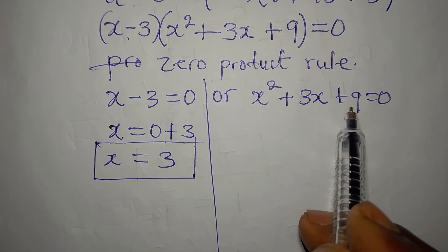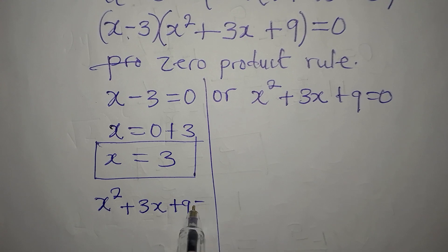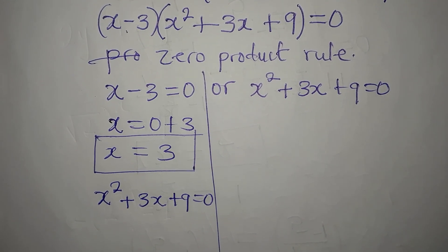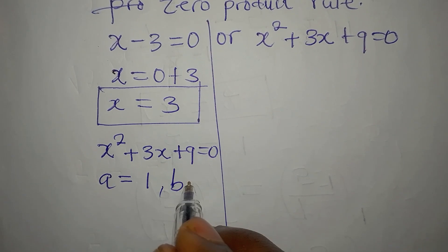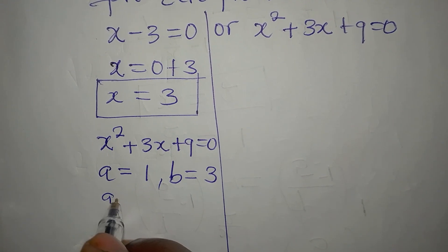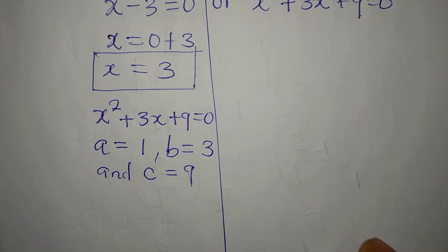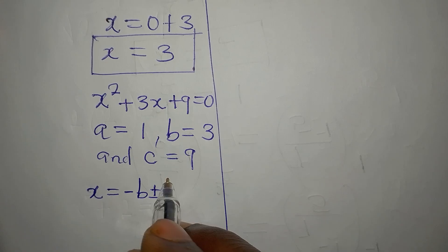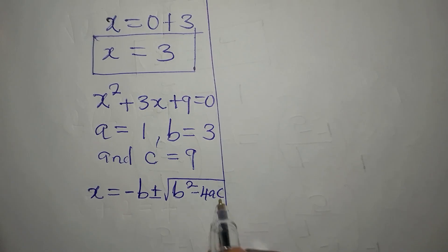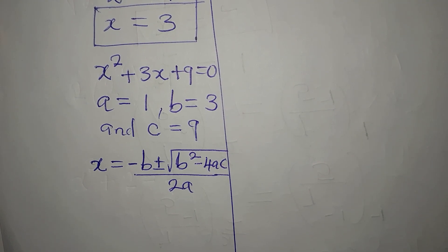To get the other solutions, let's bring this to the left so that we have x squared plus 3x plus 9 equals 0. This is quadratic, so let's use the quadratic formula. We identify a, which will be 1 — the coefficient of x squared — and b, which is positive 3.